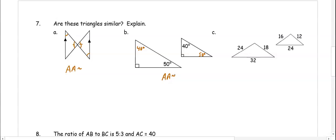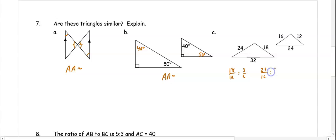In part c, we need to see if the triangles are similar by checking that all sides have the same ratio. Pairing the shortest side with the shortest side: 18 over 12 reduces to 3 over 2. Then 24 over 16 reduces to 3 over 2, and 32 over 24 also equals 3 over 2. They all reduce to the same ratio, so the triangles are similar by side-side-side similarity.